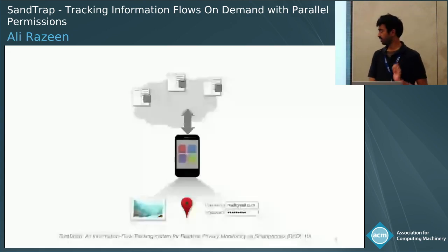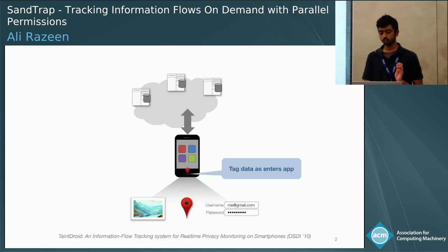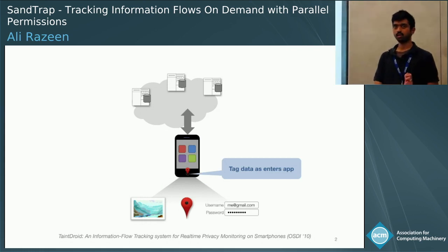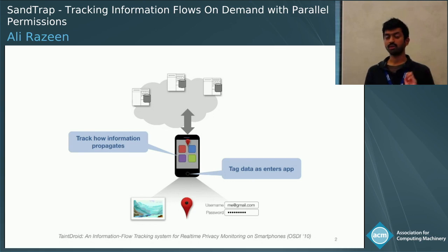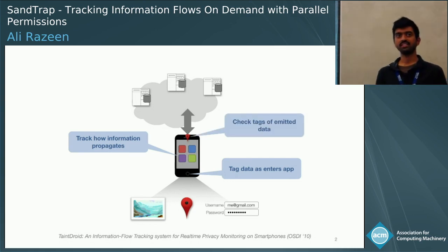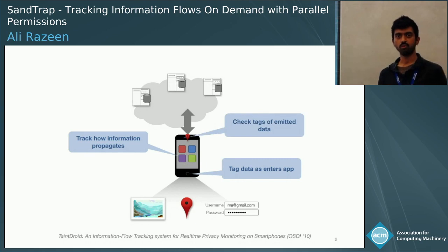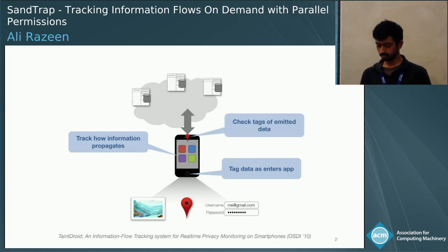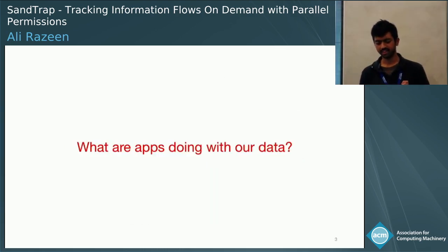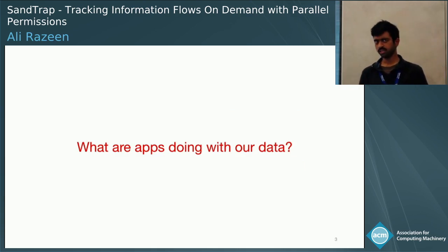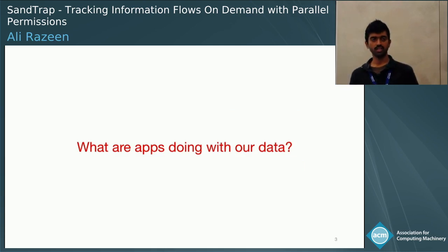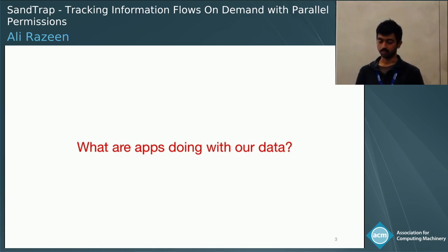At a high level, the way TaintDroid works is it assigns unique tags to different kinds of data on our device. During runtime, as the app makes use of our data, TaintDroid propagates the tags appropriately and lets us know when tainted data leaves the phone, say through the network. TaintDroid was initially developed to help us answer: what are apps doing with our data? After all, they do have access to a lot of our personal content, and we really want to know if they are accessing and sharing them in unexpected ways.